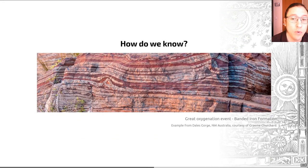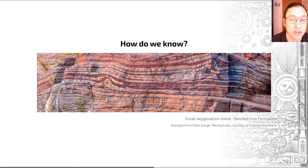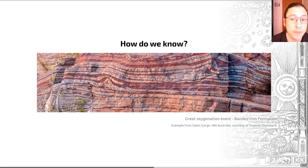It's plausible that photosynthesis paralleled the development of stromatolites in early Earth. It may well be that early photosynthesizers used sunlight in some form of different reaction to the one that releases oxygen.